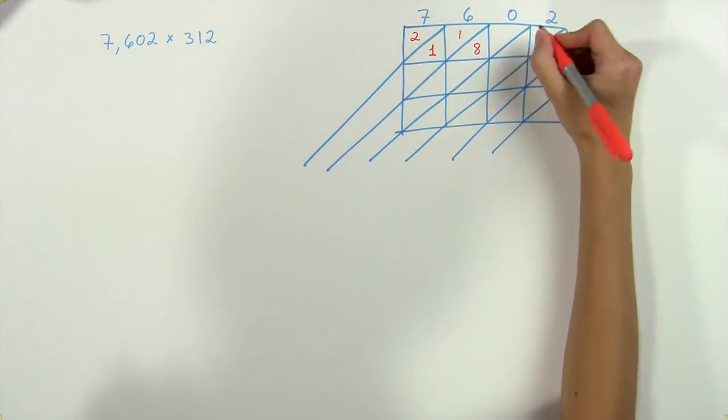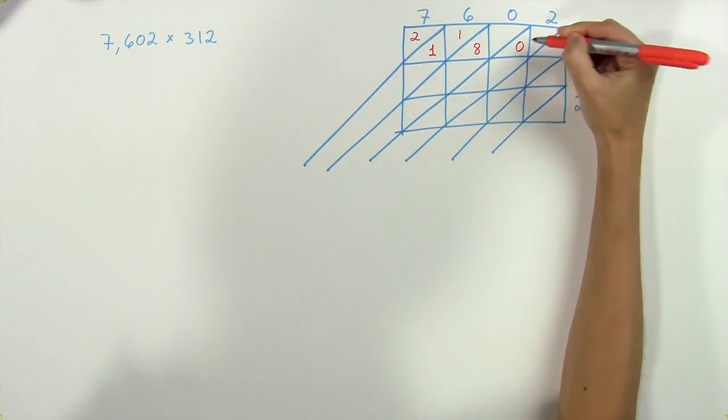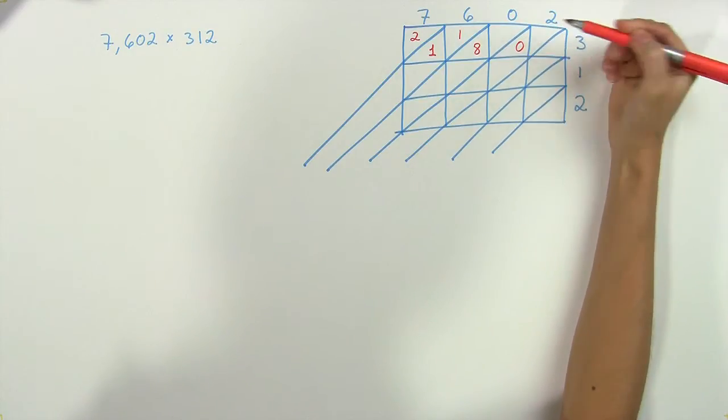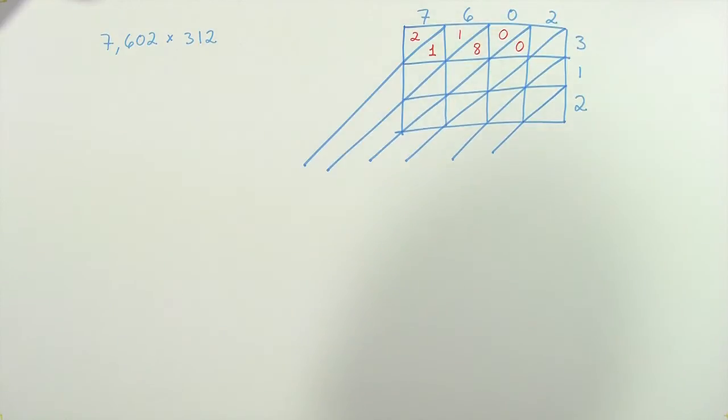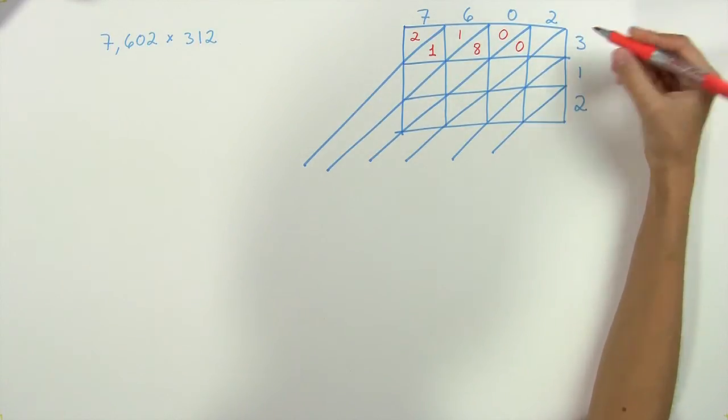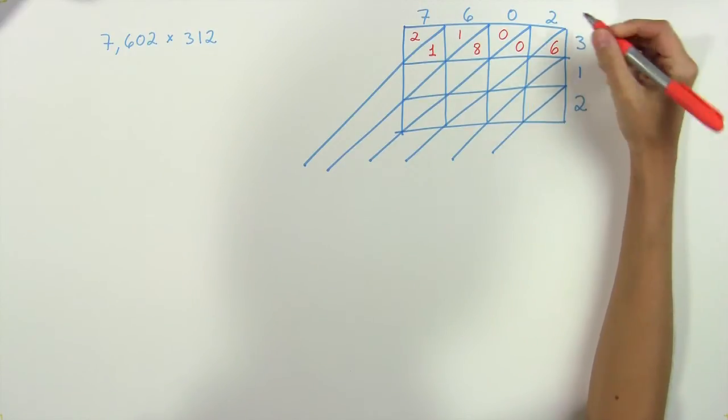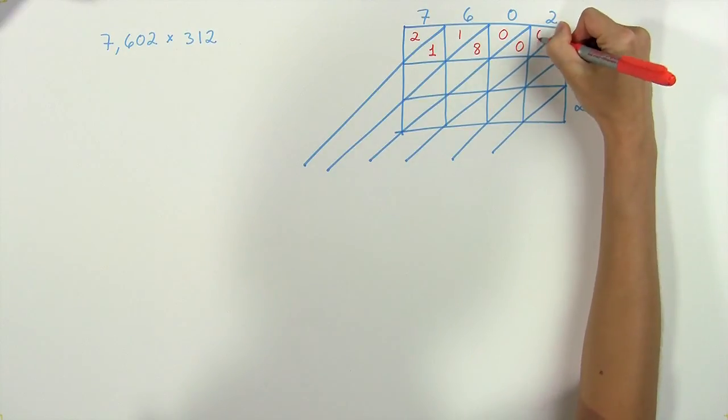And then no matter what that digit was, we fill the top half in with another zero. Next we have two times three, which is six. So the six goes here, and up here again we have a zero for our placeholder.